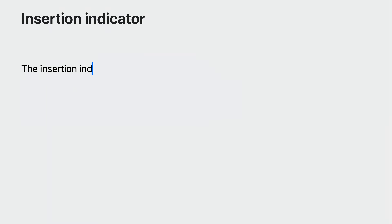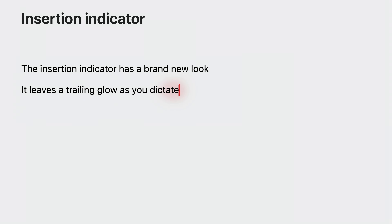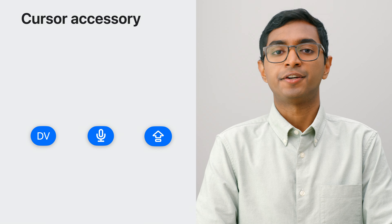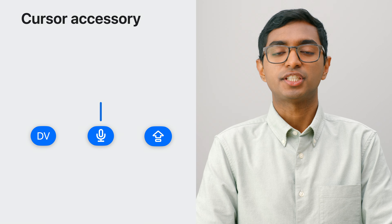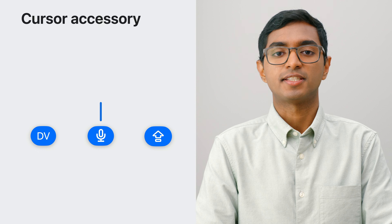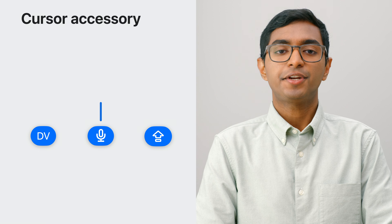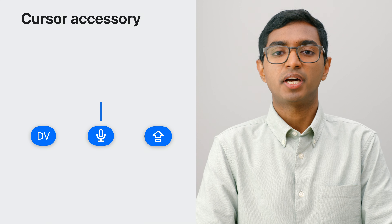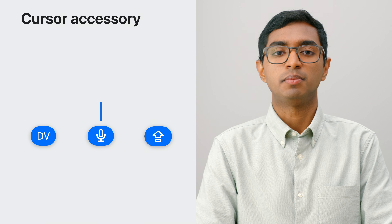macOS Sonoma introduces significant changes to the typing experience and improvements to text layout in non-English languages. It starts with a brand new insertion indicator that adapts to the current accent color and leaves a trailing glow as you dictate text. There is also a cursor accessory below the insertion indicator that displays key information like input mode, dictation state, and caps lock state. The accessory tracks the current insertion position and will be pinned to the bottom of the document if the insertion position is outside the visible view.